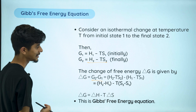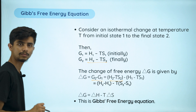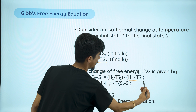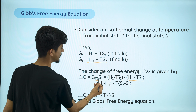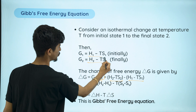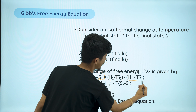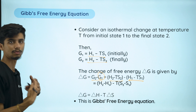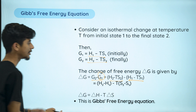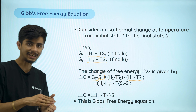The final value is H2 minus TS2. And the initial value is H1 minus TS1. So we do: (H2 minus TS2) minus (H1 minus TS1).